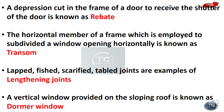Lap, fish, scarfed, and tabled joints are examples of lengthening joints. A vertical window provided on a sloping roof is known as a dormer window.